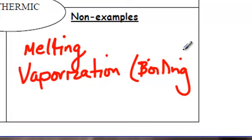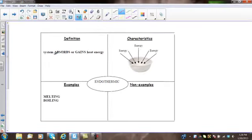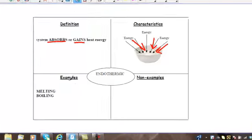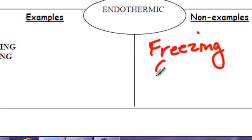Let's review the term endothermic. Endothermic means that the system absorbs or gains energy. Endo, meaning in. The energy is going into the system. Examples of endothermic reactions are melting and boiling. So, non-examples would be the opposite of that, which would be freezing and condensation.